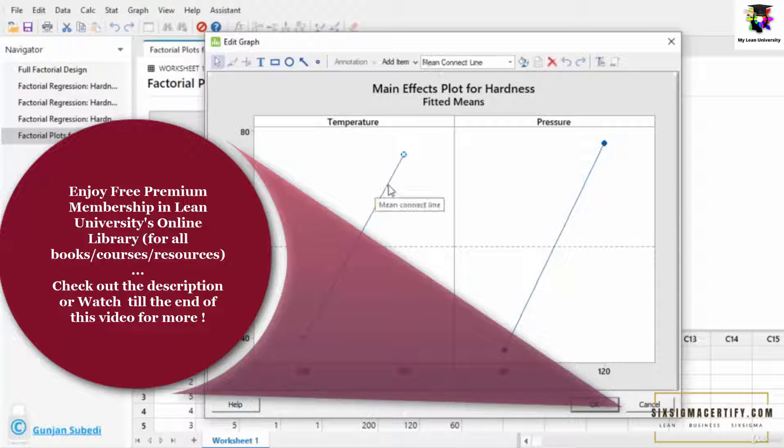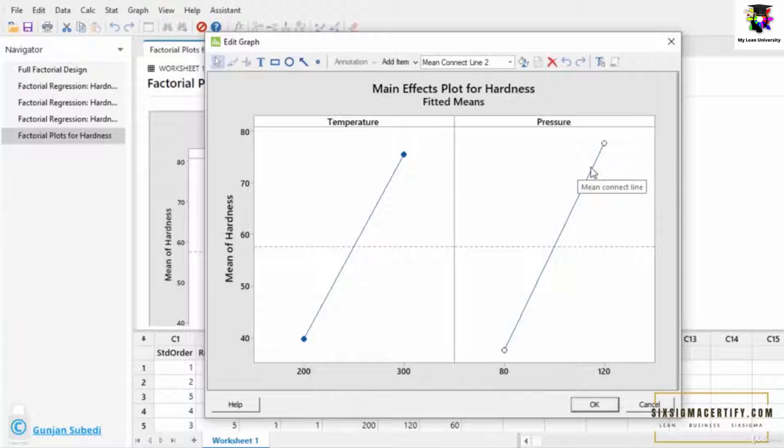For example, the line or the graph for temperature is inclined and the graph for pressure is also inclined. Or say both the graphs for temperature and pressure have some slope.